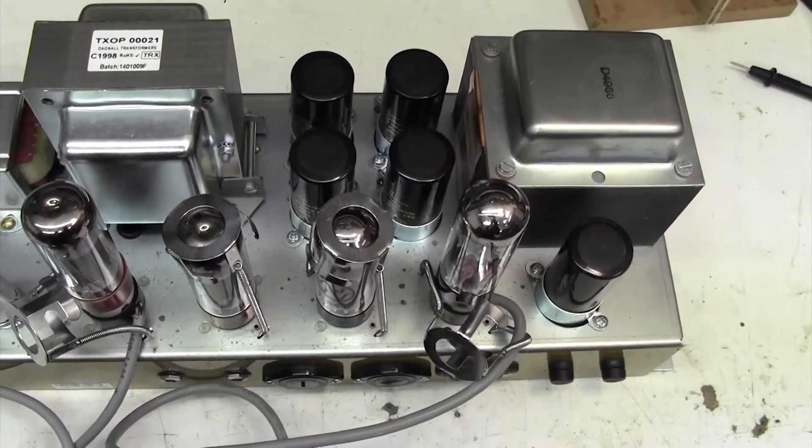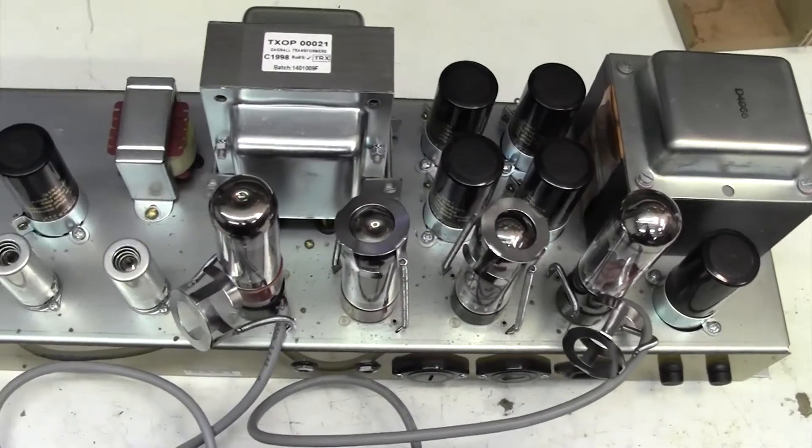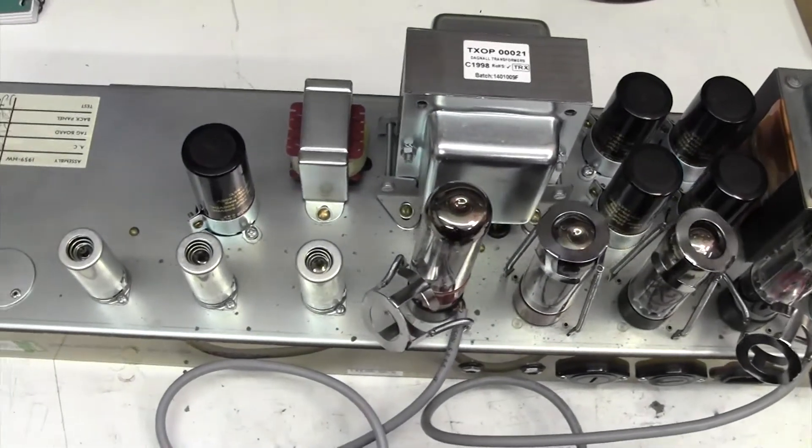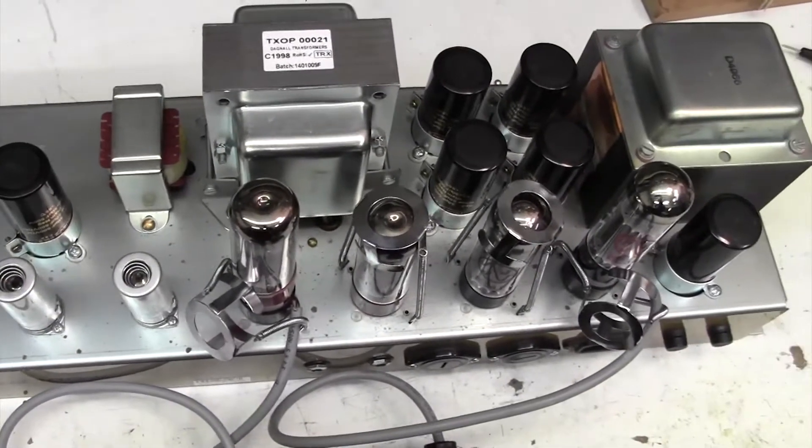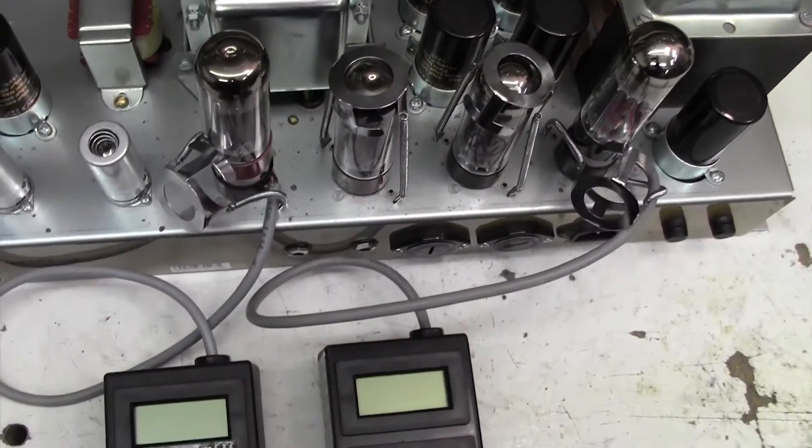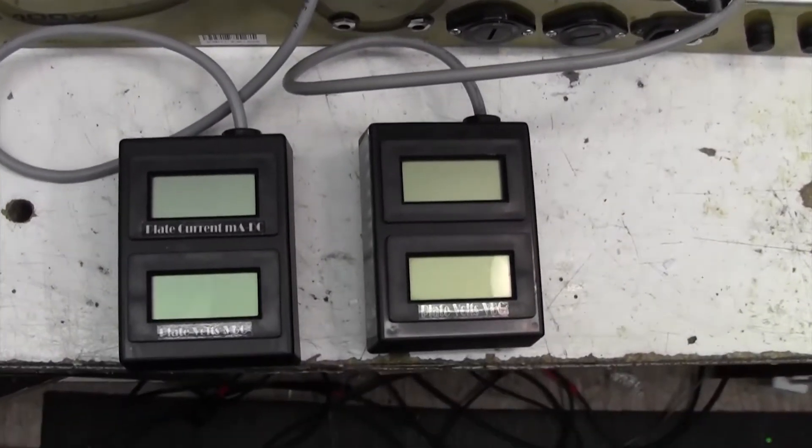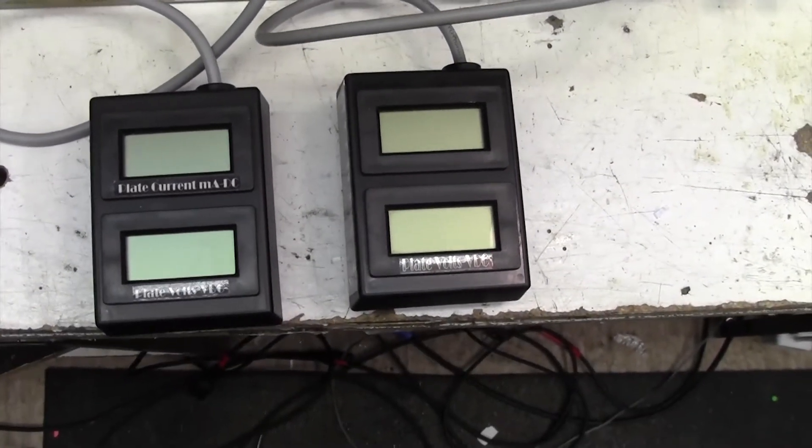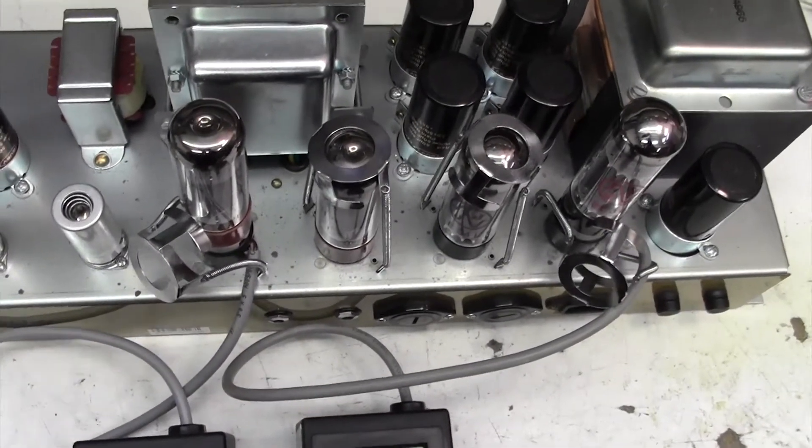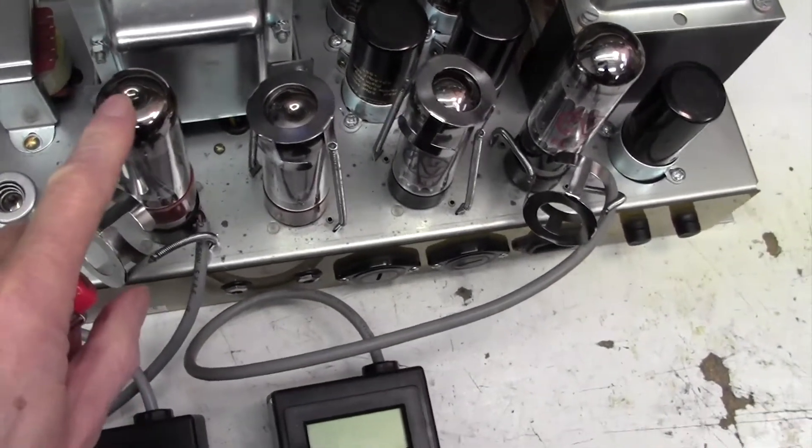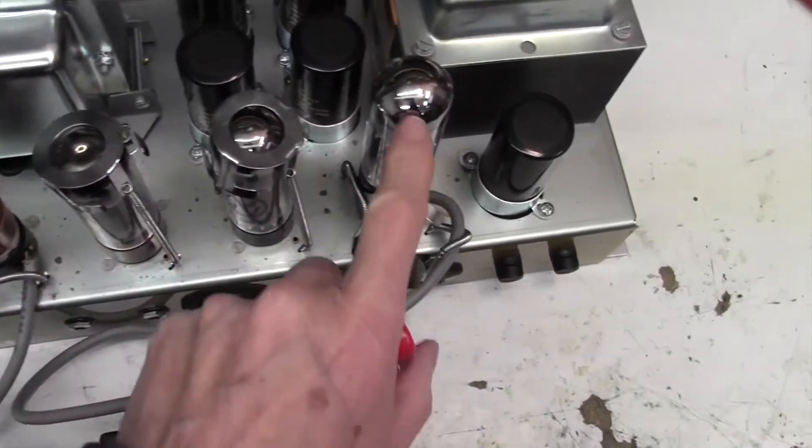I've removed the chassis now from the amplifier and here it is up on the bench. I thought I'd show you how I connect the bias meters. Don't panic - I've got two bias meters attached here, one on each of the pairs. This one is going through the left-hand valve, that's one pair; this one's going to the right-hand valve, that's another pair.